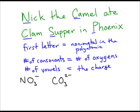The next one is a fun one. Cl in 'clam' becomes the Cl in the polyatomic. We've got three consonants, so we've got three oxygens. And one vowel, which gives us the charge negative one — so this represents our chlorate. The S in 'supper' gives us four oxygens because there are four consonants in supper. And we see two vowels, so the charge is two minus — that gives us the polyatomic sulfate.